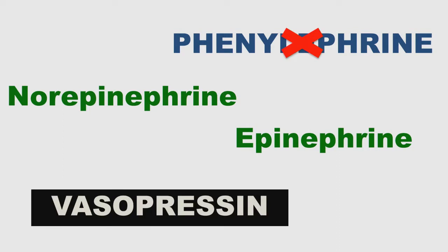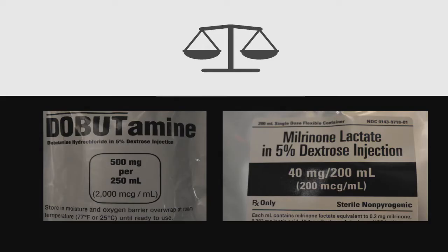When things aren't going well, inotropes can help you augment RV contractility. Dobutamine and milrinone are both well-studied in this context — it is really dealer's choice. Just remember that both of these agents can promote hypotension and often require a second agent to be on board at the same time.